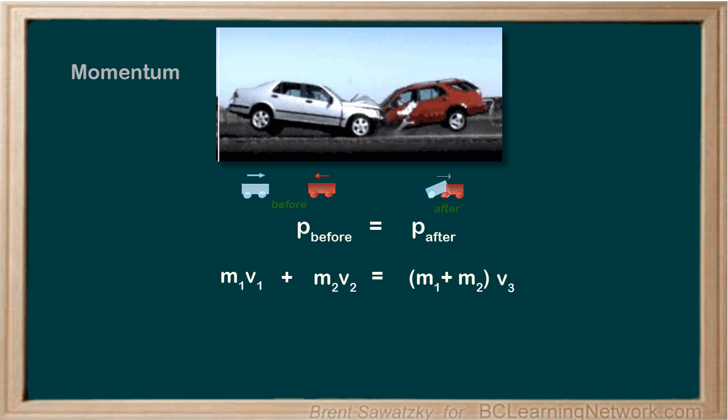If we're looking for the velocity of the wreck after the crash, we could rearrange to solve for our V3 and take a look at it like this. See, pretty easy. Without momentum we'd have to try and determine the forces involved and determine how those forces would accelerate each mass, and then we would have to involve kinematics to determine the resulting velocities, and it would turn into quite the ordeal assuming we could even get all the information about the forces involved in the crash. Momentum makes this pretty easy.